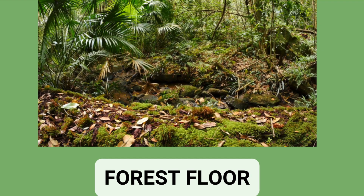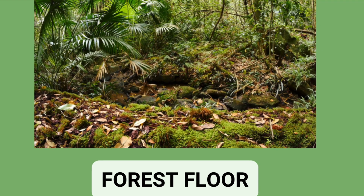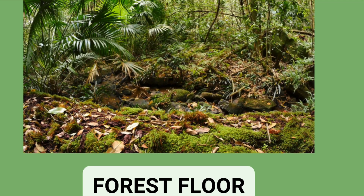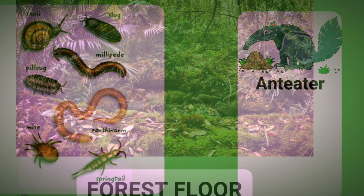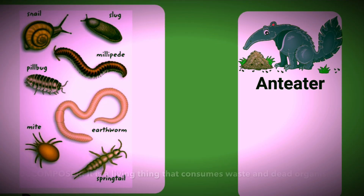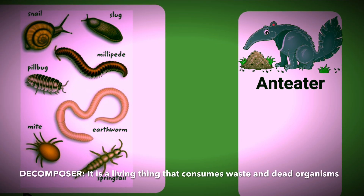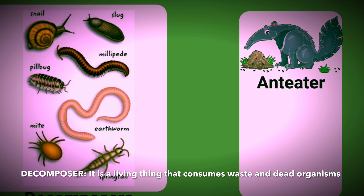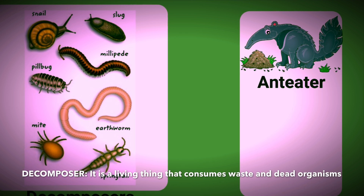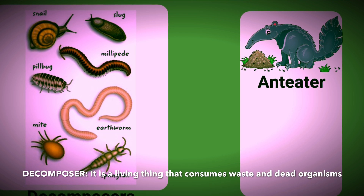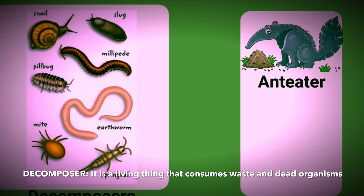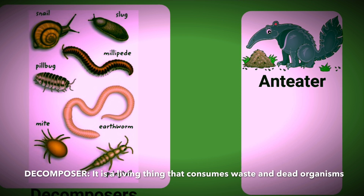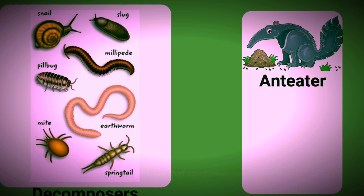The forest floor is the darkest of all layers of the rainforest. Decomposers such as termites, slugs, worms, and fungi thrive on the forest floor. Giant anteaters live in this layer too.